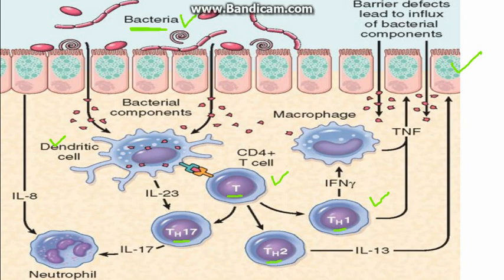Th17 cells secrete interleukin-17, which recruits neutrophils, leading to enzyme production and free radical release that injures the epithelium. Th1 cells secrete interferon-gamma, which activates macrophages that secrete tumor necrosis factor, further injuring the epithelium.